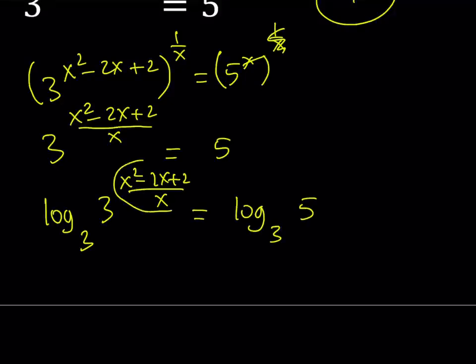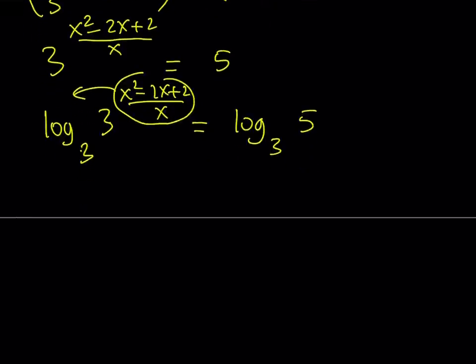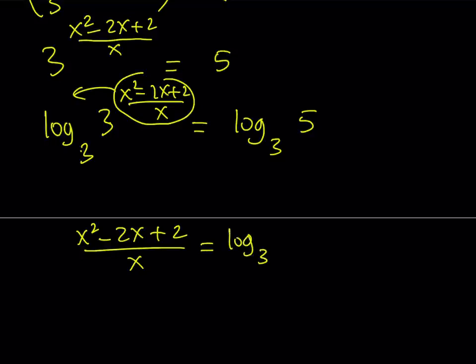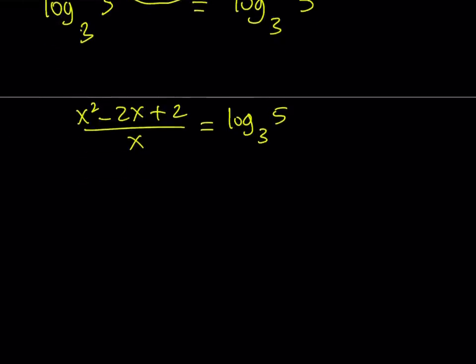So now I can move this stuff to the front and log 3 with base 3 is going to be 1. So this gives me x squared minus 2x plus 2 over x is equal to log base 3 of 5.